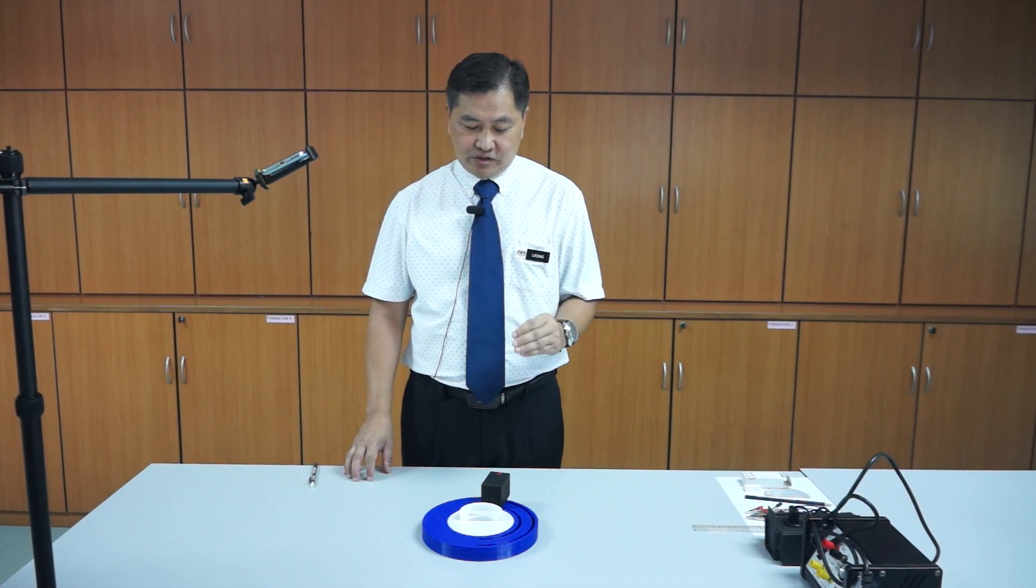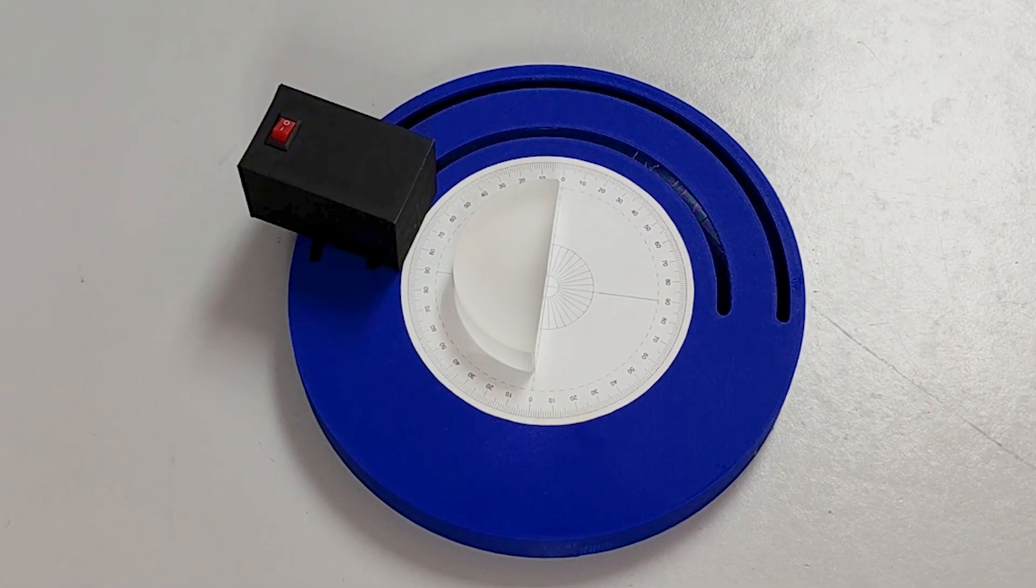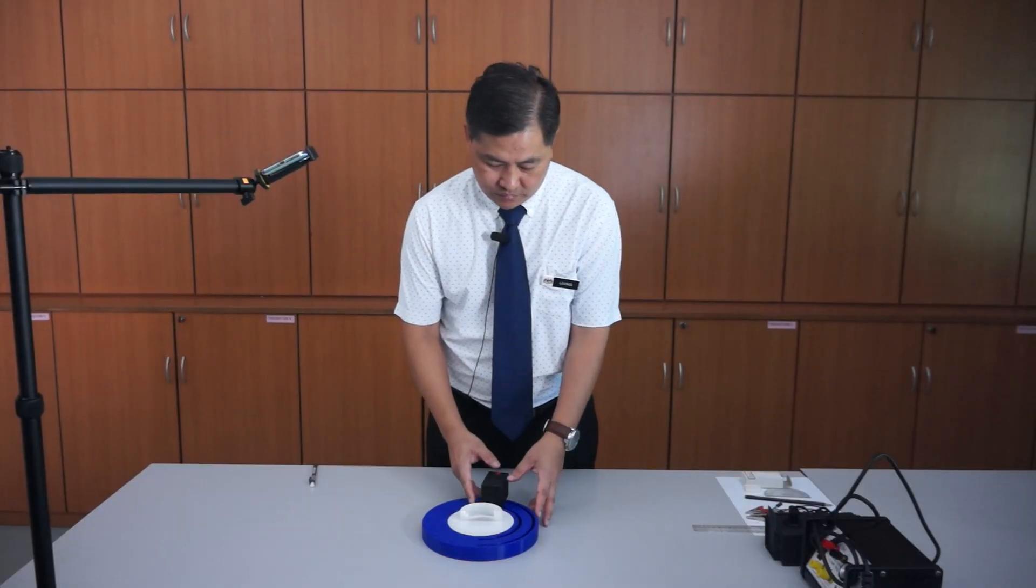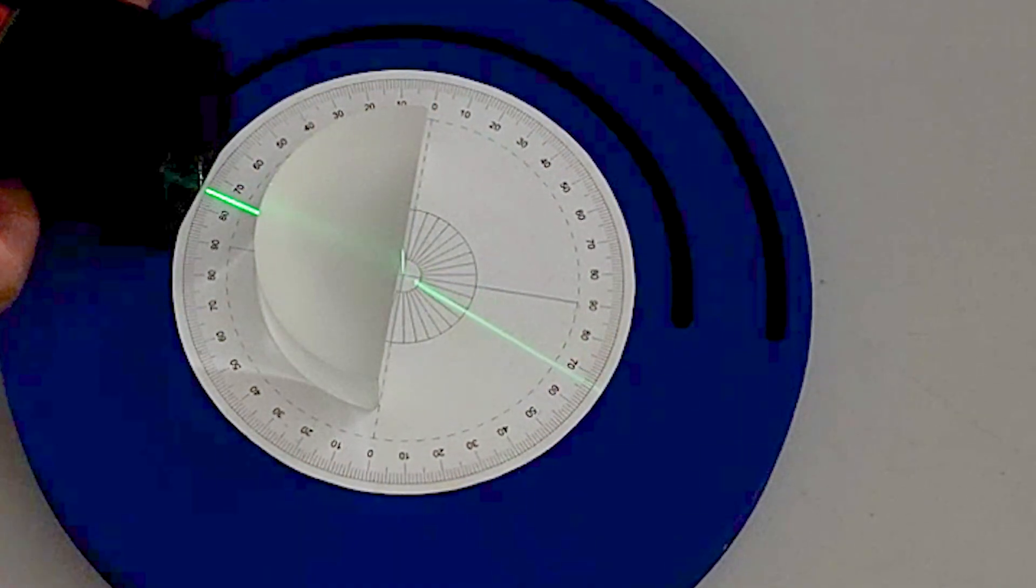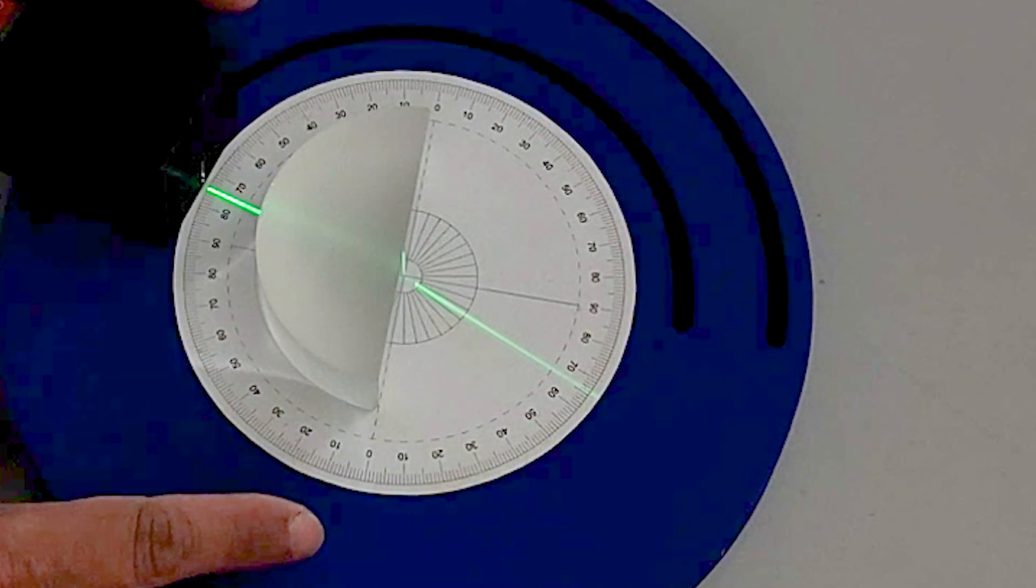In this lesson, we use an optical kit to determine the critical angle C of the glass block. We turn on the red box and direct the light to the incident point.